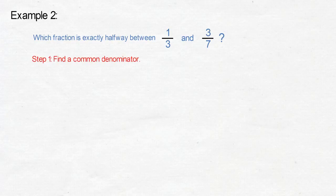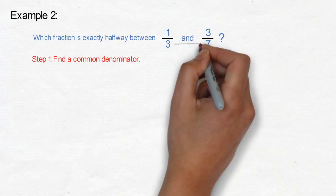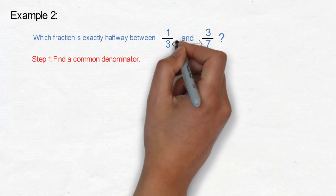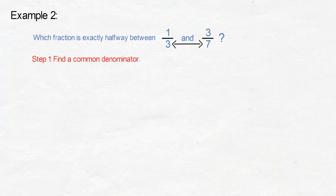Example 2: Which fraction is exactly halfway between 1 third and 3 sevenths? Step 1: Find a common denominator. To find a common denominator, we will multiply 3 by 7 to get 21.